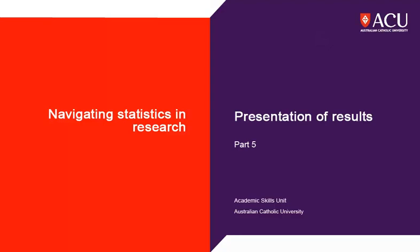In this video we will look at the results section including what sort of statistics are found in journal papers and how they are presented. This is part five in the navigating statistics and research series.